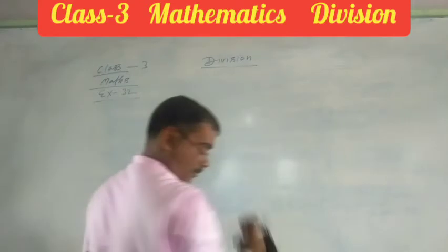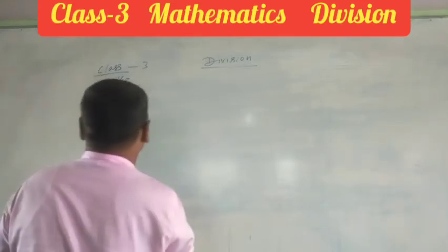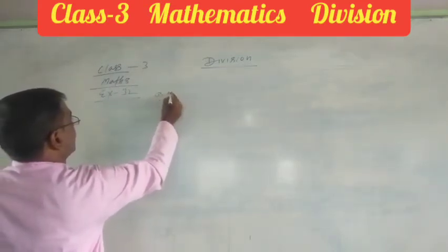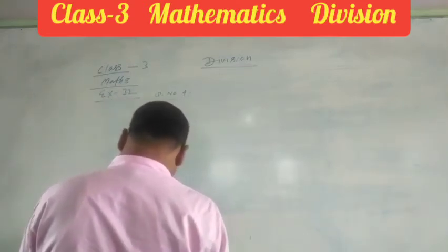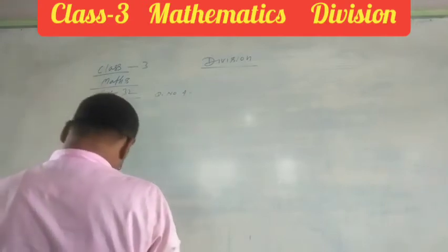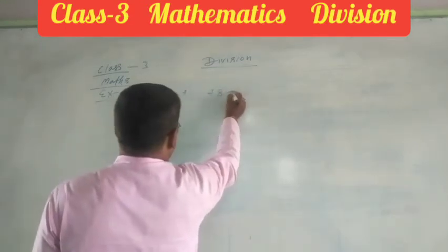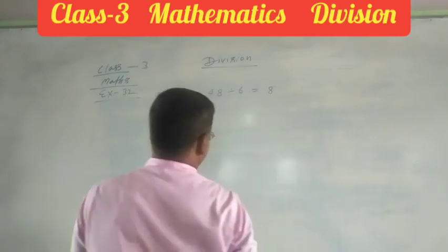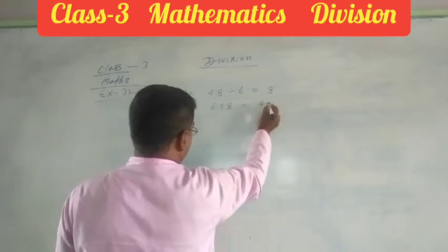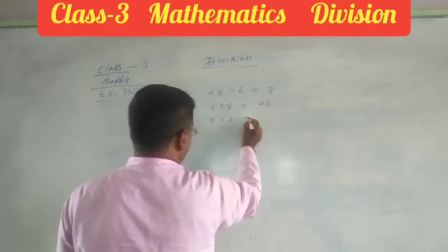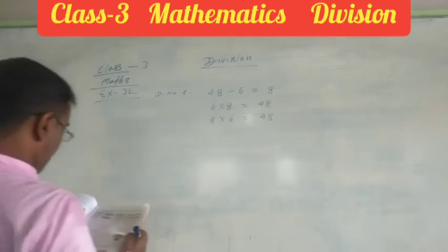Also, I teach you another question. Question number 4. In this question, write the multiplication sentence of the following division sentence. Here, 48 divided by 6 equals 8, or 8 times 6 equals 48. I think you all know about question number 4.